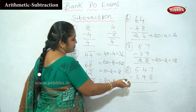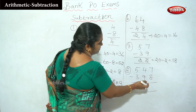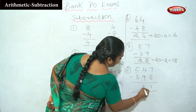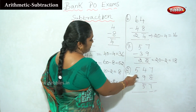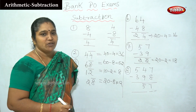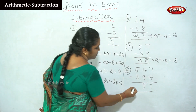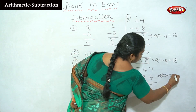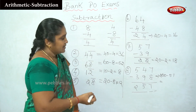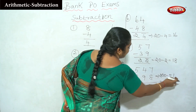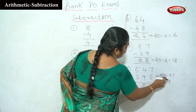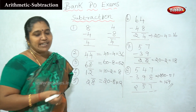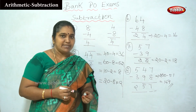Likewise, for 3-digit numbers, we apply the same method. We identify where the small digit is larger than the top digit, apply the bar notation, adjust neighboring digits, and arrive at the answer. These are simple tricks we can use.